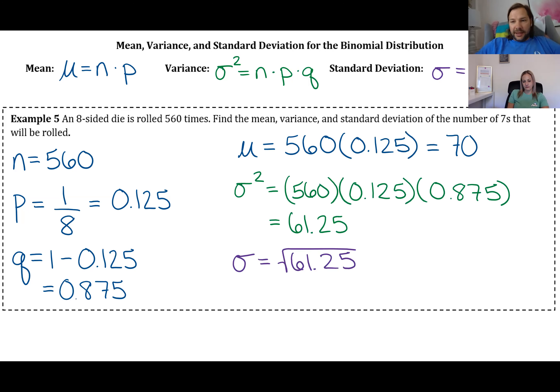And then finally, the standard deviation is just going to be the square root of that, so the square root of 61.25 is 7.826.